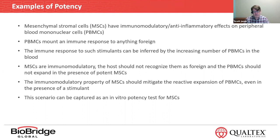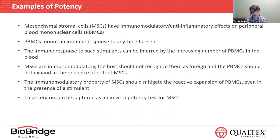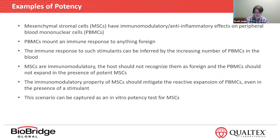Now let's go over a specific example of potency. This example involves mesenchymal stromal cells, or MSCs. These are cells of interest as potential cell therapies because of their immunomodulatory capabilities — they can, in most cases, downregulate or in some cases upregulate certain immune cells. Peripheral blood mononuclear cells, or PBMCs, are immune cells that really mount the immune response. So the immunomodulatory properties of these mesenchymal stromal cells should prevent the expansion of PBMCs even in the presence of a stimulant.